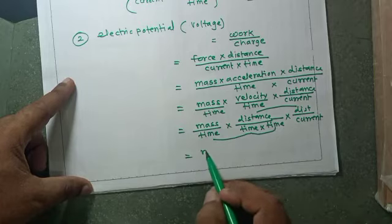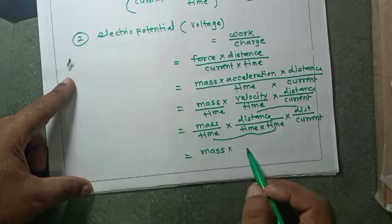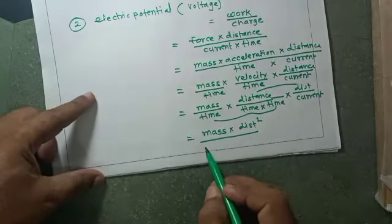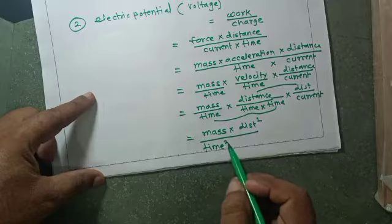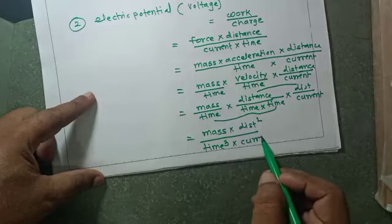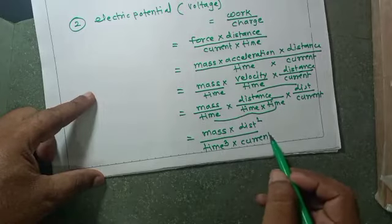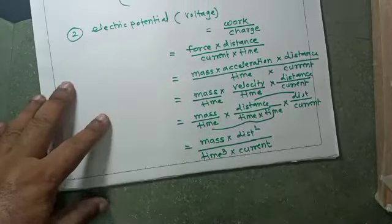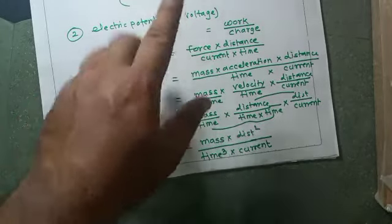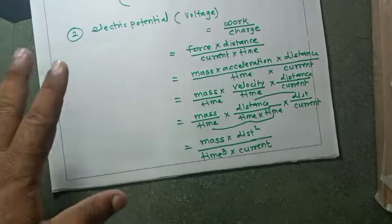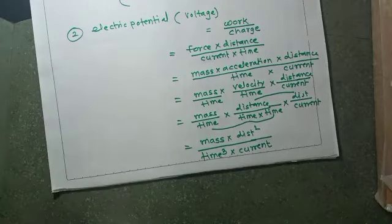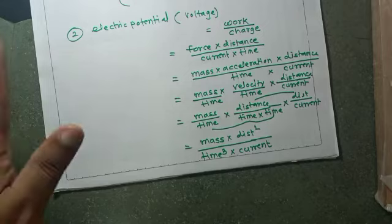The dimensional formula for electric potential is mass multiplied by distance squared divided by time cubed multiplied by current. This is the dimensional formula for electric potential, also called voltage or potential difference between two points.